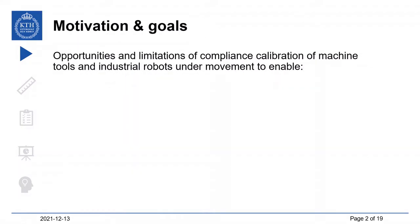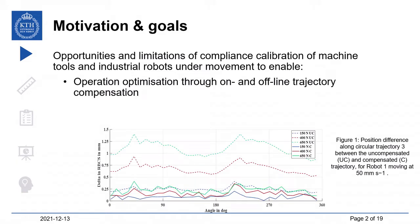The results of this work are meant to contribute to the understanding of the opportunities and limitations of precision measurement instruments for compliance calibration and validation for machine tools and industrial robots under movement. This is meant to enable operational optimization through on- and offline trajectory compensation, as seen in Figure 1, which shows the position difference over a circular trajectory between an uncompensated trajectory (dashed lines) and a compensated one (solid lines).